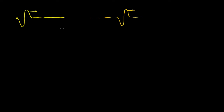That pulse has propagated down the string. And in the last video, we said this disturbance that's propagating down the string, or propagating down this medium — although it doesn't necessarily have to have a medium — we call this a wave. And in particular, this wave right here is a pulse, a pulse wave, because we only have essentially one perturbation of the string.